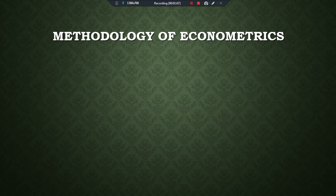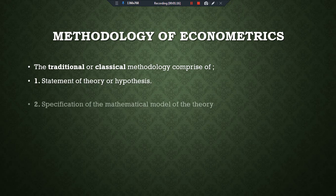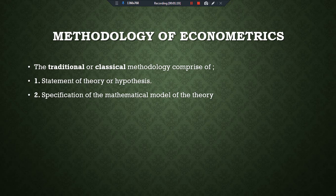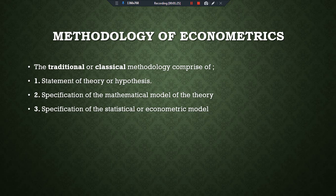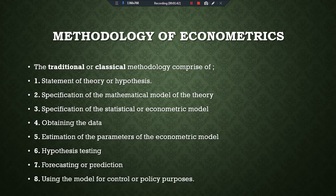The traditional or classical methodology comprises these steps: first, the statement of theory or hypothesis; second, specification of the mathematical model of the theory; third, specification of the statistical or econometric model; fourth, obtaining the data; fifth, estimation of parameters of the econometric model; sixth, hypothesis testing; seventh, forecasting or prediction; and eighth, use of the model for control or policy purposes.